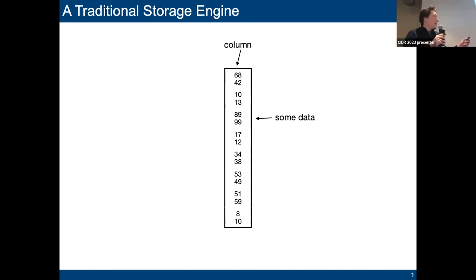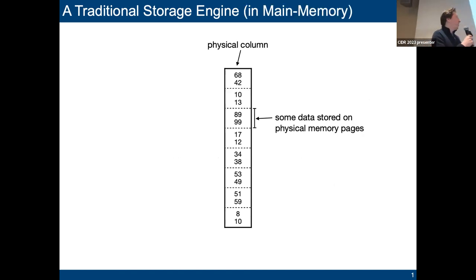Of course there's some kind of data in this column, let's say integers. This data is now materialized in physical main memory, and as you probably know, physical main memory is segmented into physical memory pages denoted by these stage lines here.